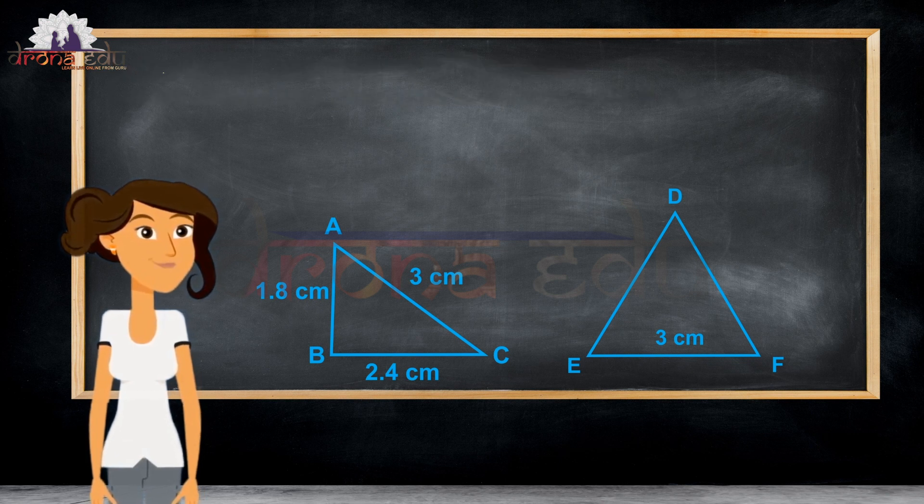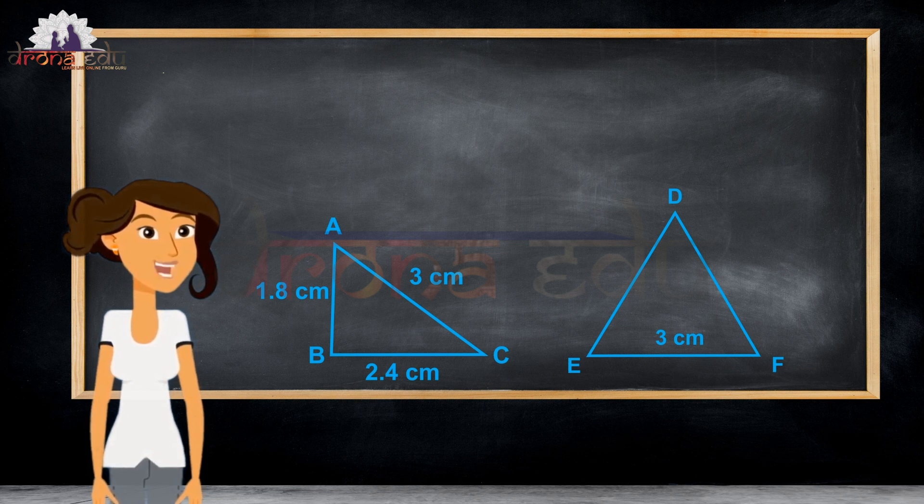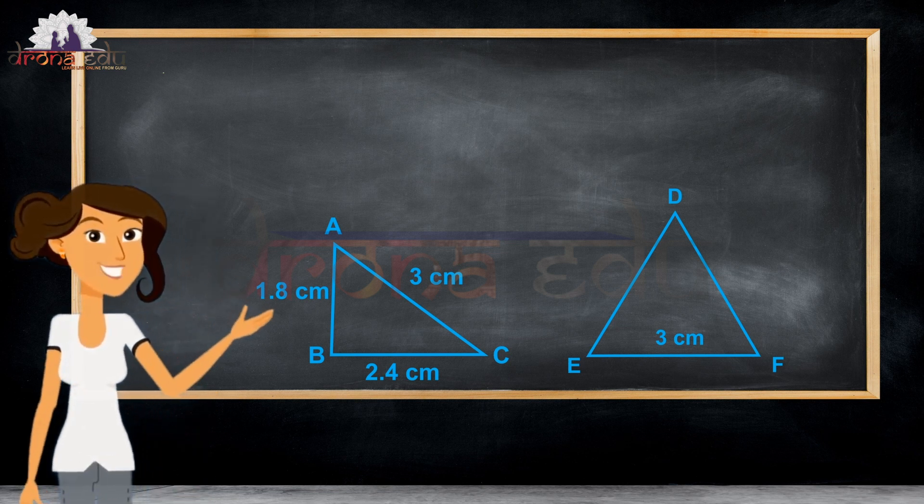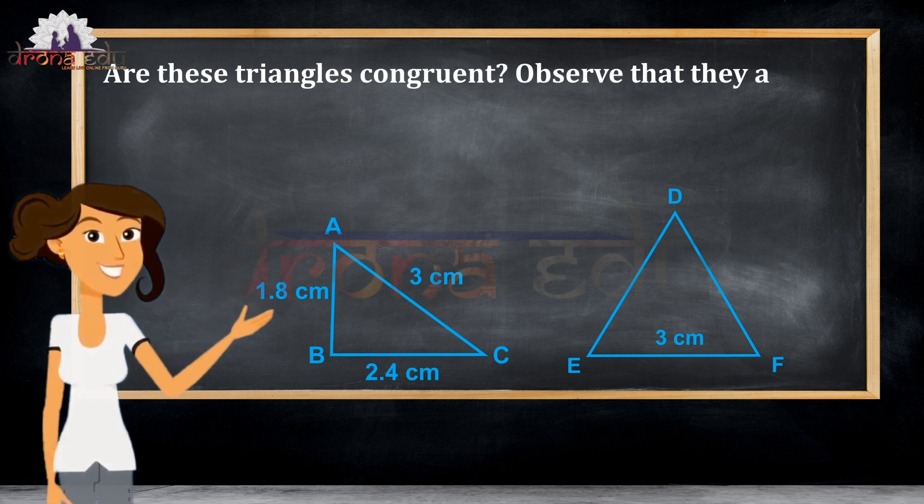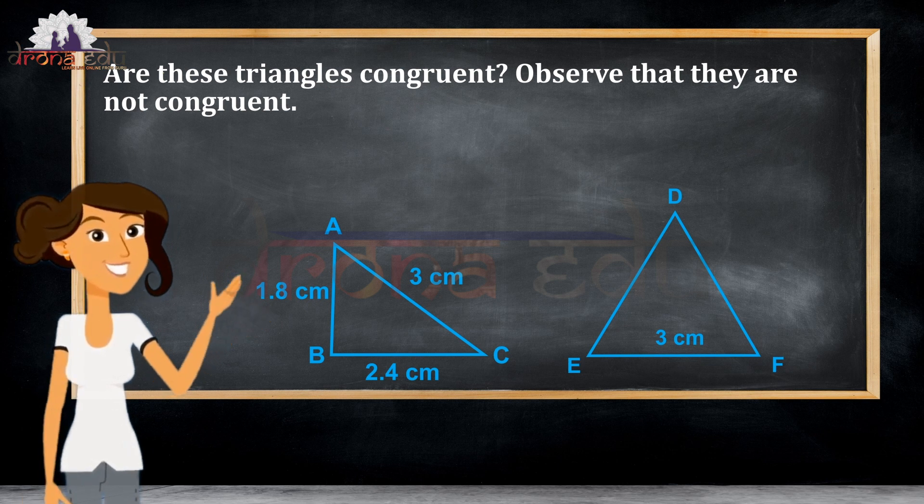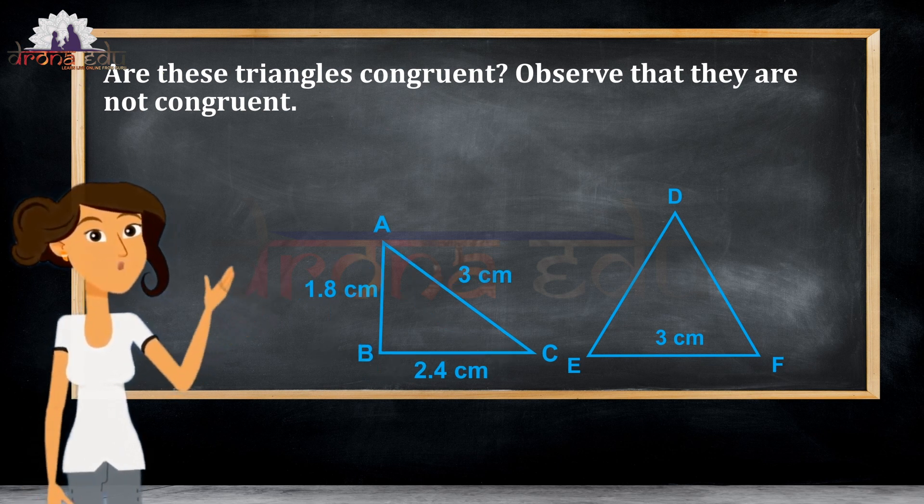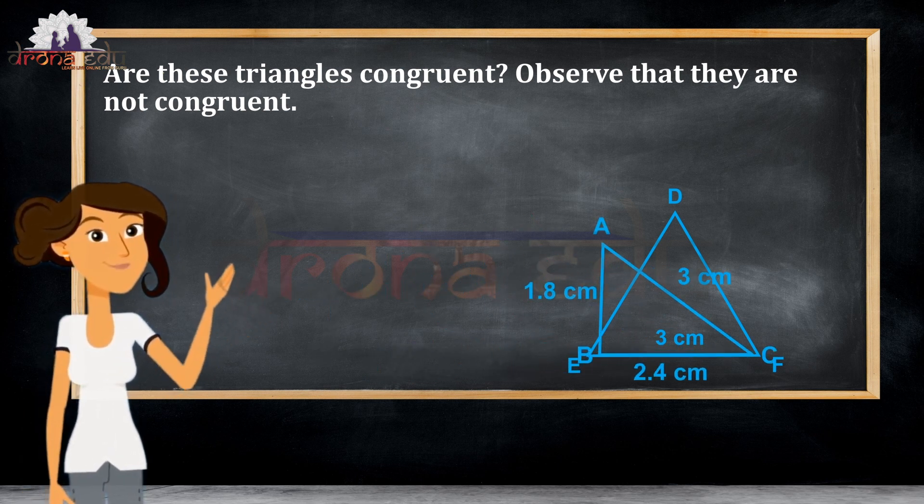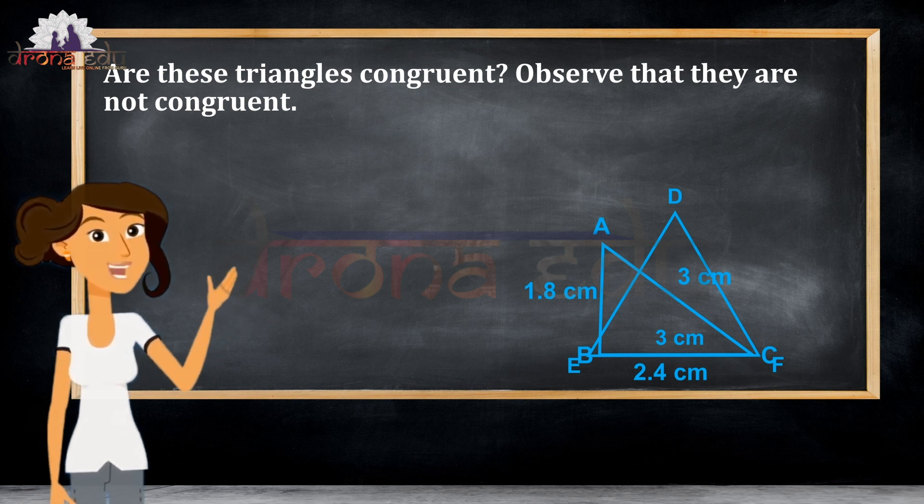When I draw the two triangles, I get triangle ABC and triangle DEF. Here, are these two triangles congruent? Observe that when I place one triangle above the other, they are not completely covering. So, they are not congruent.